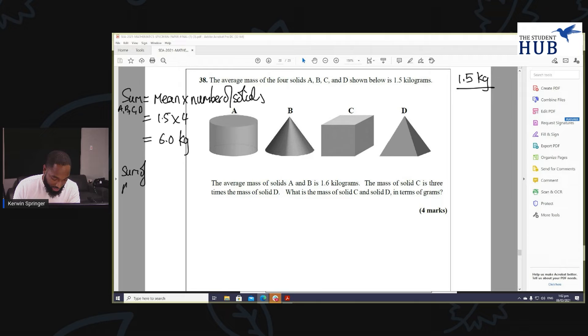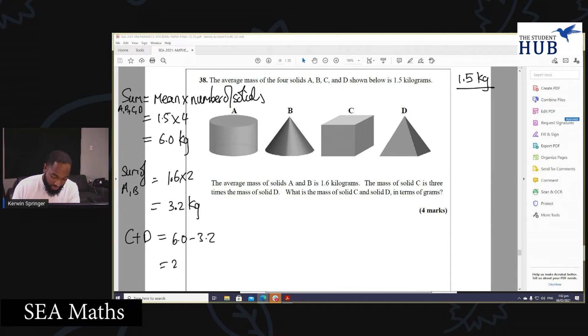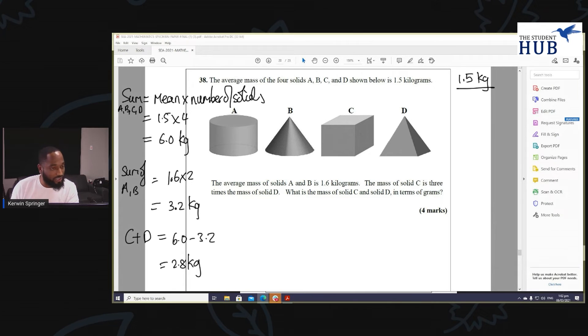The sum of A and B would be 1.6 times 2, right? Because on average the mass of A and B is 1.6. So 1.6 times 2, we're going to get 3.2 kg. What does this mean? This means that C and D must add up to 6.0 take away 3.2, the entire take away these two mass, and that gives us 2.8 kg. So we're reaching places with this amount of working here.